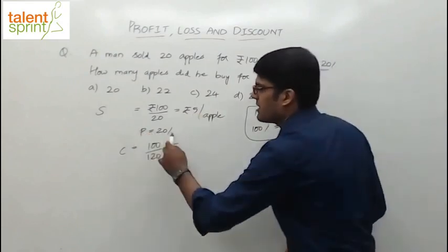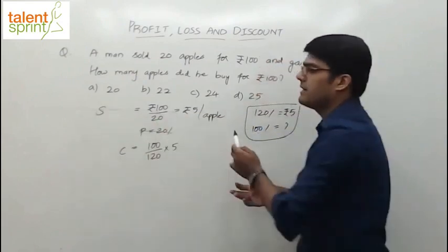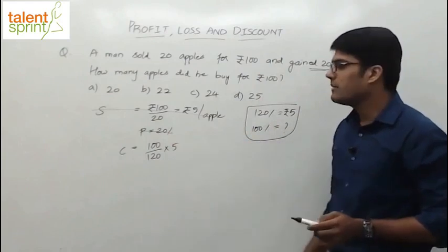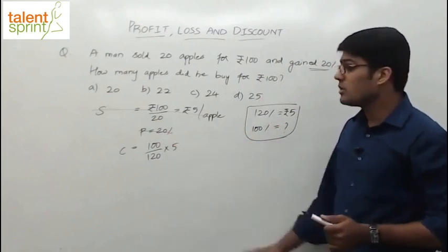And you can see this step is not required. This step also is not required. 100 by 20 is 5. I am sure all of you can do it. Only thing is cost price is this: 100 by 5. This is cost price per apple.